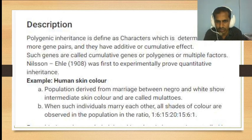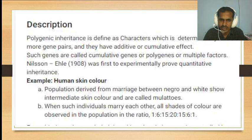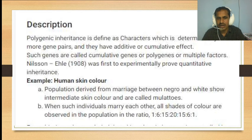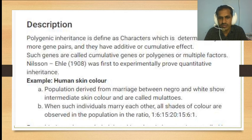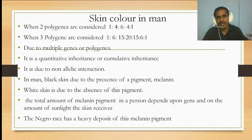The study examined skin color in a population derived from marriage between Negro and white individuals. Parent one is Negro and parent two is white. In the F1 generation we get intermediate skin color, called mulattoes. When such individuals marry each other, all shades of color are observed in the population. With three genes the ratio is 1:6:15:20:15:6:1.